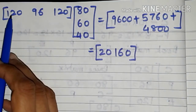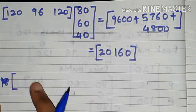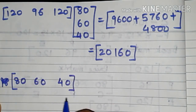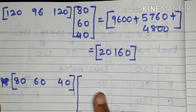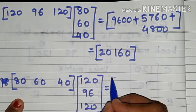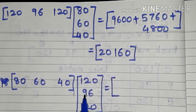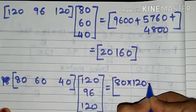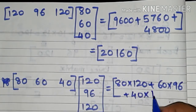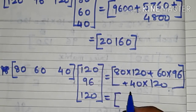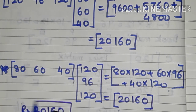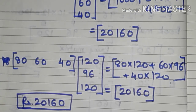Another method is to take the price matrix first instead of the book matrix. The price matrix of order 1 by 3 is [80, 60, 40], and the book matrix of order 3 by 1 is [120, 96, 120]. Only the order of multiplication has changed. The result is 80 times 120 plus 60 times 96 plus 40 times 120, which again gives 20,160. So rupees 20,160 is the total amount obtained by selling all the books.